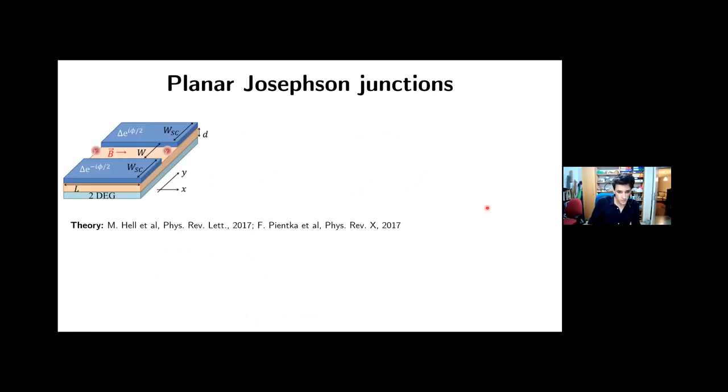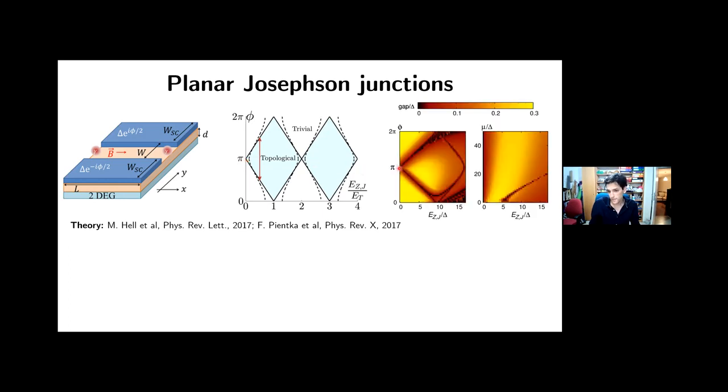Another very prominent platform that relies on these phase biasing is the planar Josephson junction. So it was originally introduced in these two theory papers that came in conjunction, more or less. And the idea there is to take a semiconductor two-dimensional electron gas as your host system with strong spin orbit coupling. Then you put two superconducting electrodes, you phase bias them, and you apply an in-plane magnetic field. And this is what the phase diagram looks like and as you can see, when the phase bias is close to pi, then the necessary Zeeman field to bring you to the topological phase becomes smaller and smaller. Up to the point where at pi, the field is zero or very close to zero.